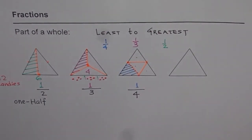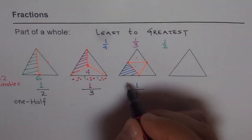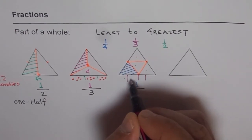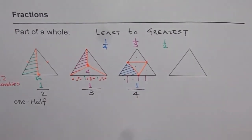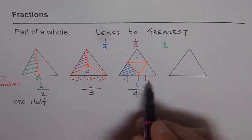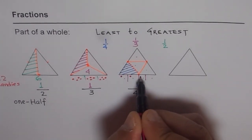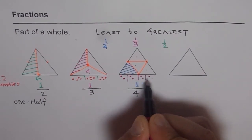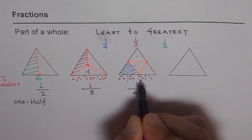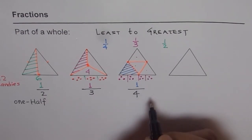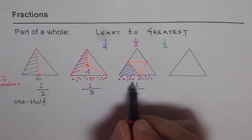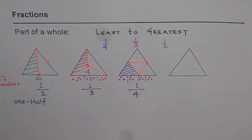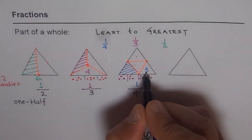If there are four friends, I have to divide into four groups. Let's start sharing 12 among four friends: one, two, three, four — five, six, seven, eight — nine, ten, eleven, twelve. Each person will get three candies. So I'll write the number three here.